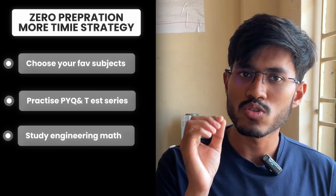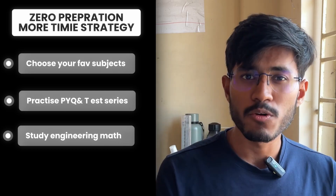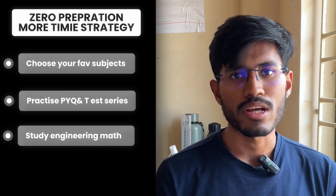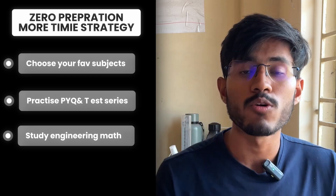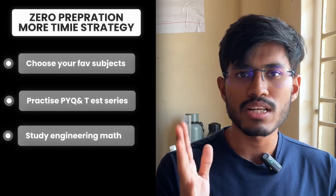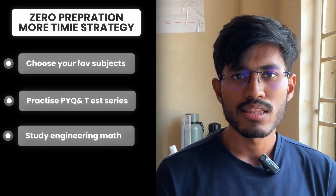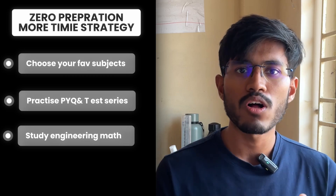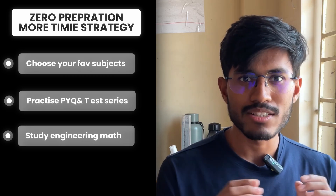For engineering mathematics: because you have more than four months, I will suggest you study engineering maths also in very detail. Four months is more than enough to study three big subjects — two core subjects and engineering mathematics. For the aptitude section, because you have more time, the first step is the same as for someone with 2.5 months: ensure you have covered all the relevant aptitude topics.